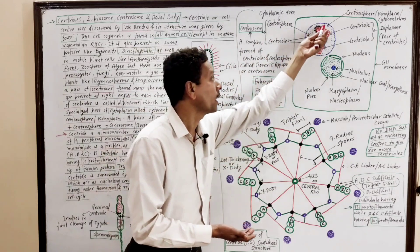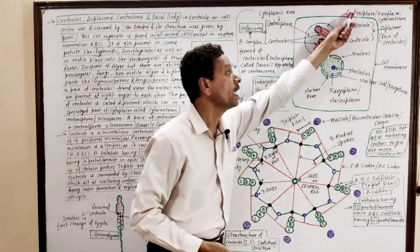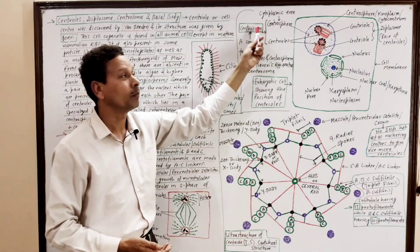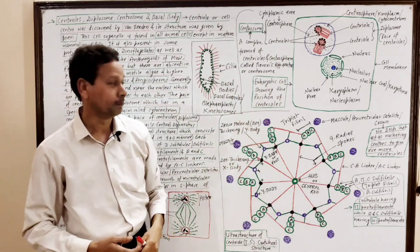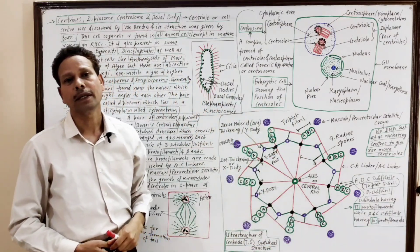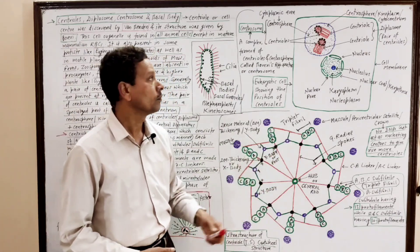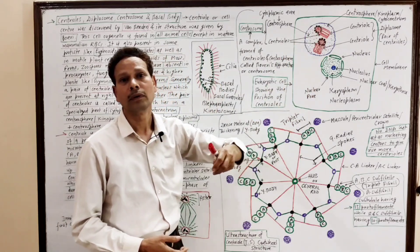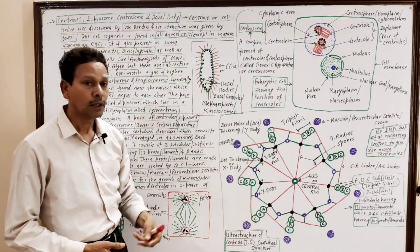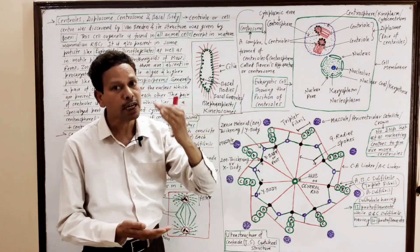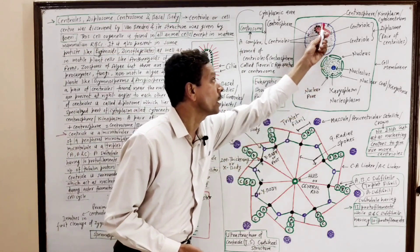These are a pair of structures lying perpendicular to each other, surrounded by a clear cytoplasm called the centrosphere, forming the complex known as the centrosome. The cartwheel electron microscopic structure of a centriole shows it is made up of nine peripheral microtubules, giving a nine-plus-zero arrangement.